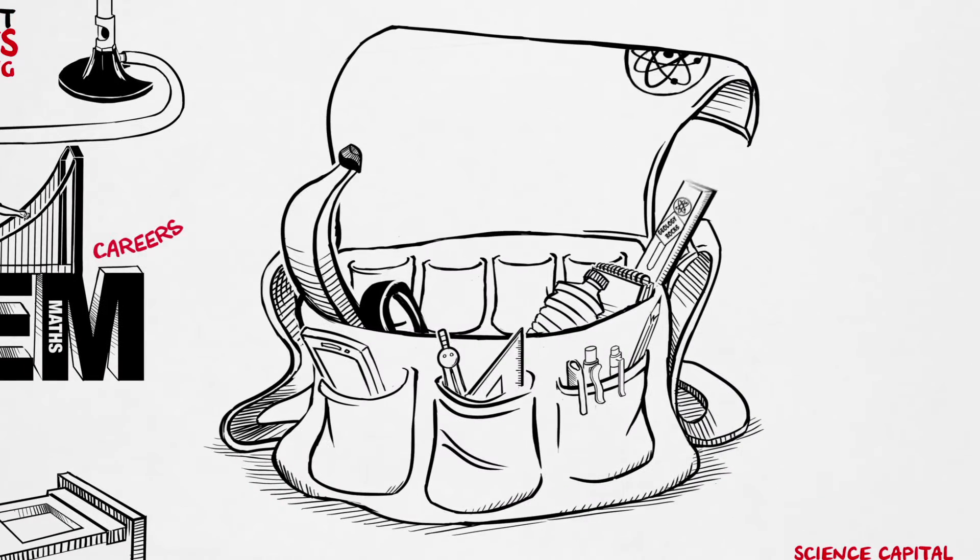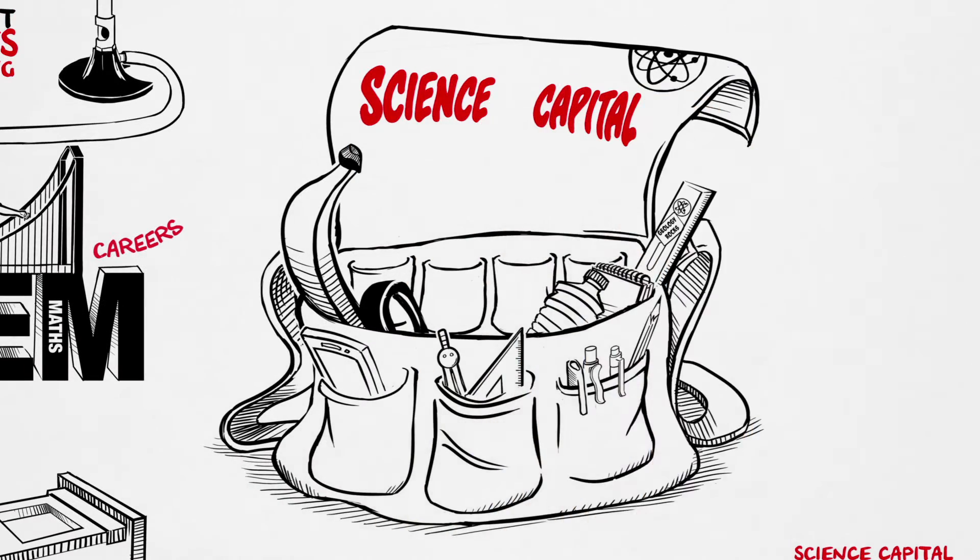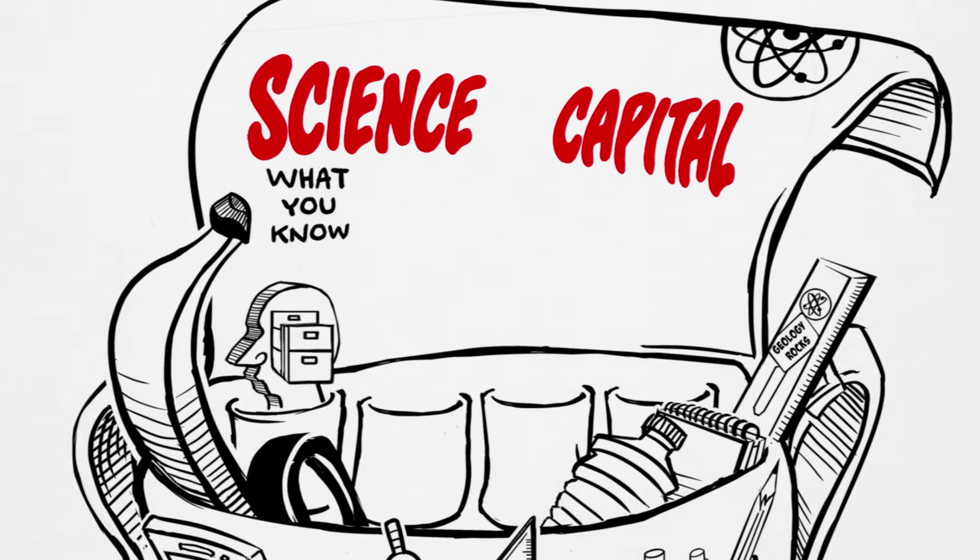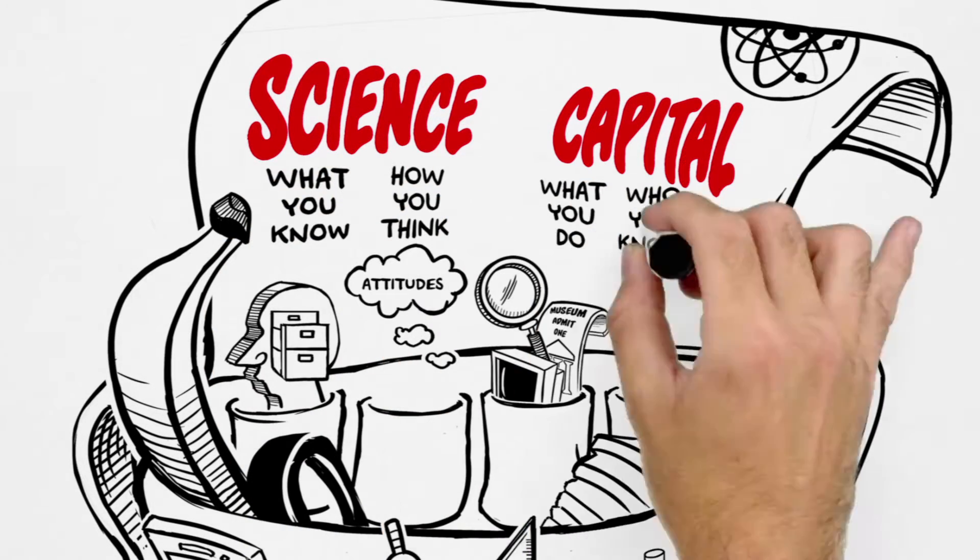The science capital each person has splits into four main types: what you know, how you think, what you do, and who you know.